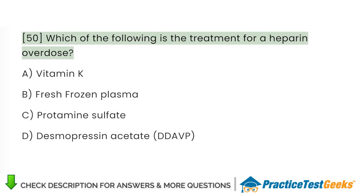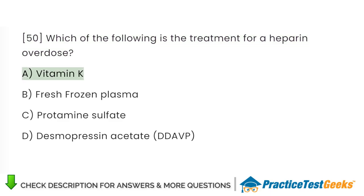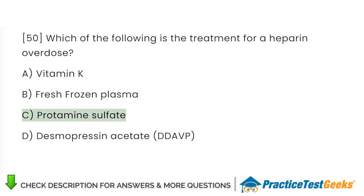Which of the following is the treatment for a heparin overdose? A. Vitamin K. B. Fresh frozen plasma. C. Protamine sulfate. D. Desmopressin acetate, DDAVP.